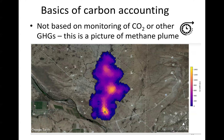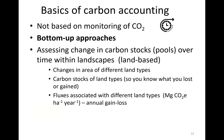On the basics of carbon accounting: we're not directly monitoring CO2 or greenhouse gases in the atmosphere. We use bottom-up approaches — we infer what is happening in the atmosphere from changes in land use and their associated carbon stocks and greenhouse gas fluxes. We take a landscape view and look at changes over time in the area of different land types and the carbon stocks in those land types, expressed in megagrams or tonnes of CO2 per hectare per year. This is sometimes called the annual gain-loss approach.